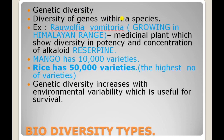Genetic diversity is seen within a species. For example, the medicinal plant Rauwolfia serpentina grows in the Himalayan range. This plant produces an alkaloid known as reserpine. The potency and concentration of reserpine varies depending upon the altitude of the Himalayan mountain range.